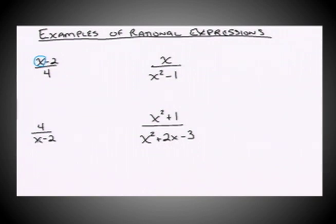The variable may also show up only in the denominator of a rational expression. And then if we look at the two examples over on the right hand side, you'll notice there are variables in both the numerator and the denominators.